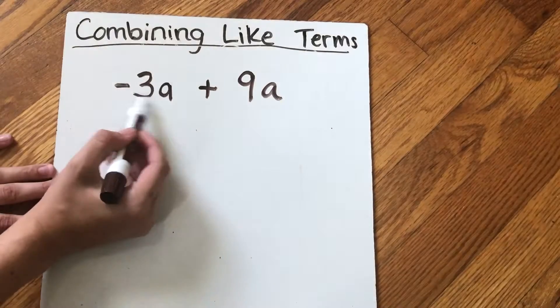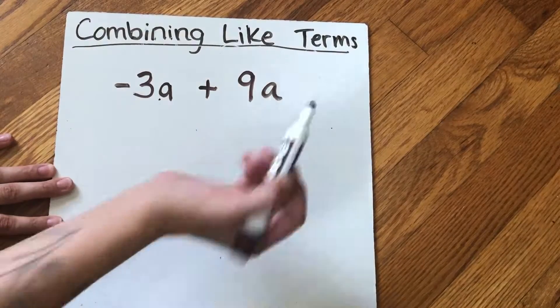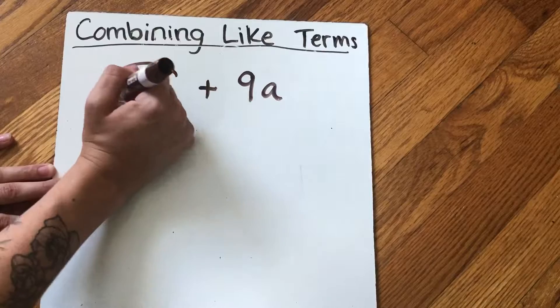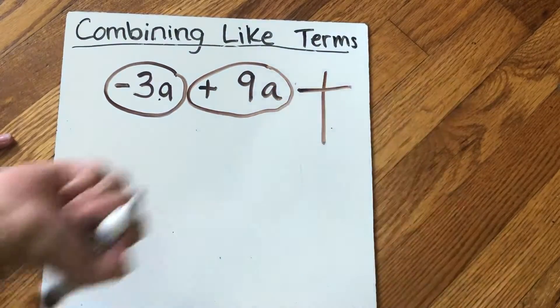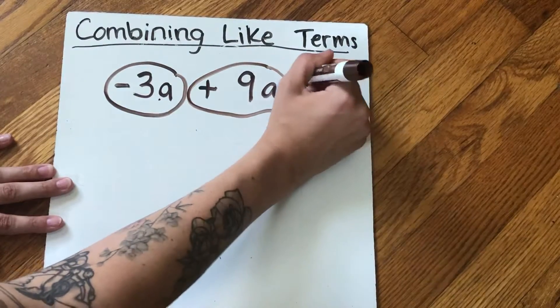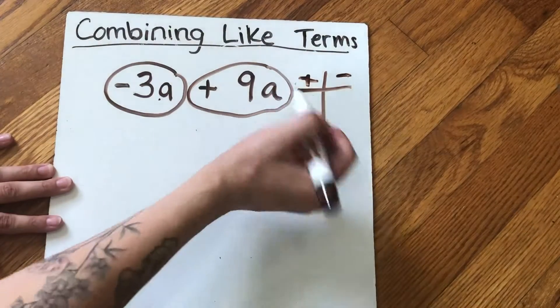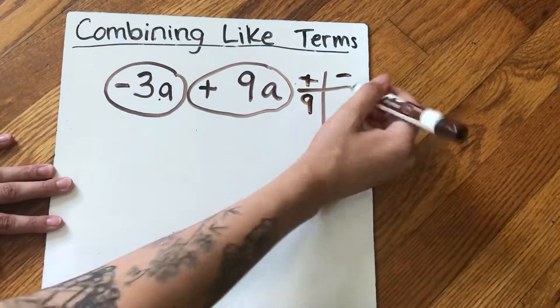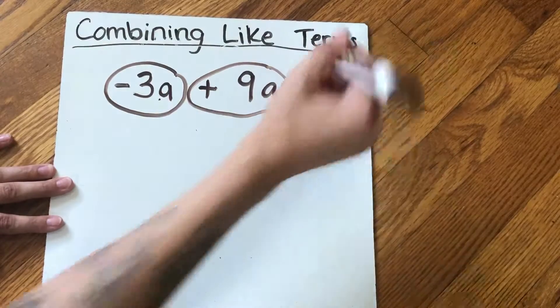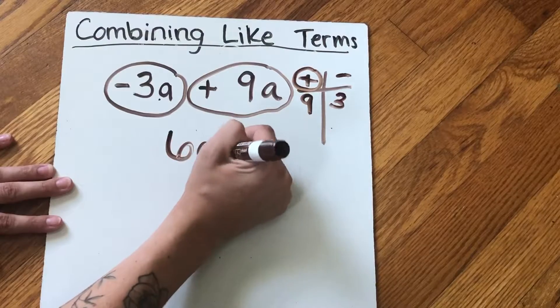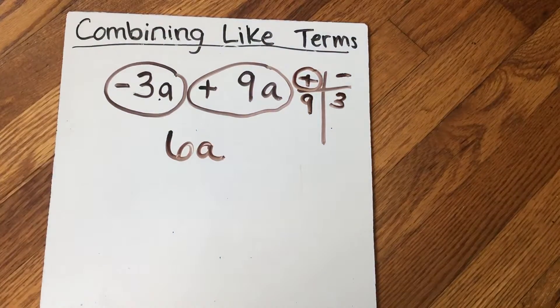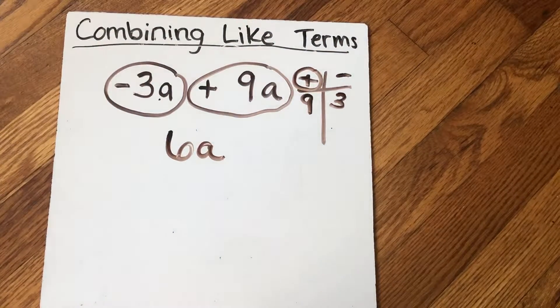So a, these are what's similar. The a is similar and the a is similar. They're on the same team. So I'm going to circle both of these. I'm going to make my t-chart to figure out exactly how many apples there are. So plus, minus, I have positive nine, negative three. So my positive team wins by six points. So I have 6a. And that's how you simplify that expression.